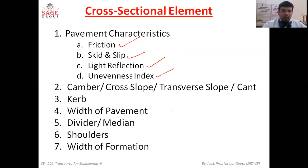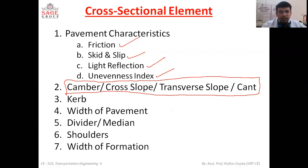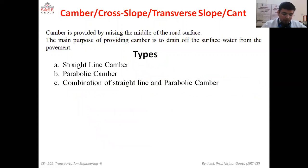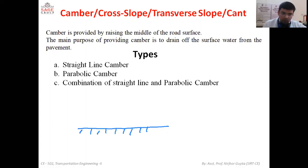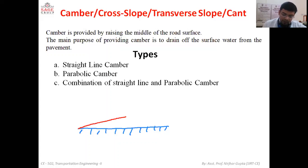For today's lecture we will focus on camber, cross slope, transverse slope — called 'kant' in railways. Camber is provided by raising the middle portion of the road surface. If the road is flat and straight, the main purpose of camber cannot be fulfilled, which is to drain off surface water from the pavement. So we raise the middle portion so that water can be easily drained off.